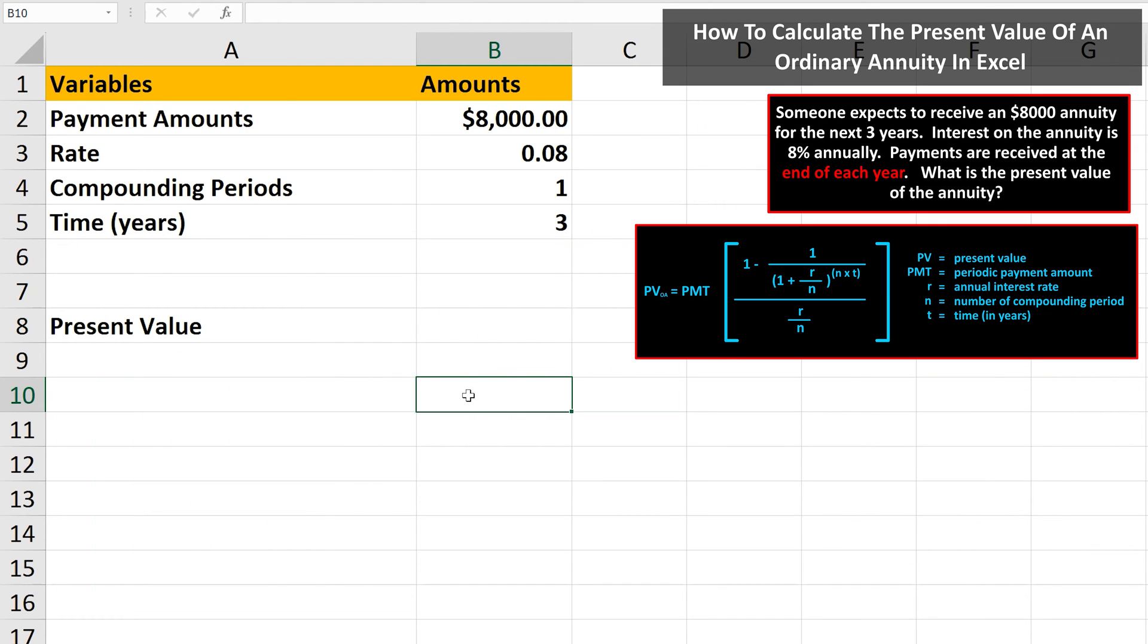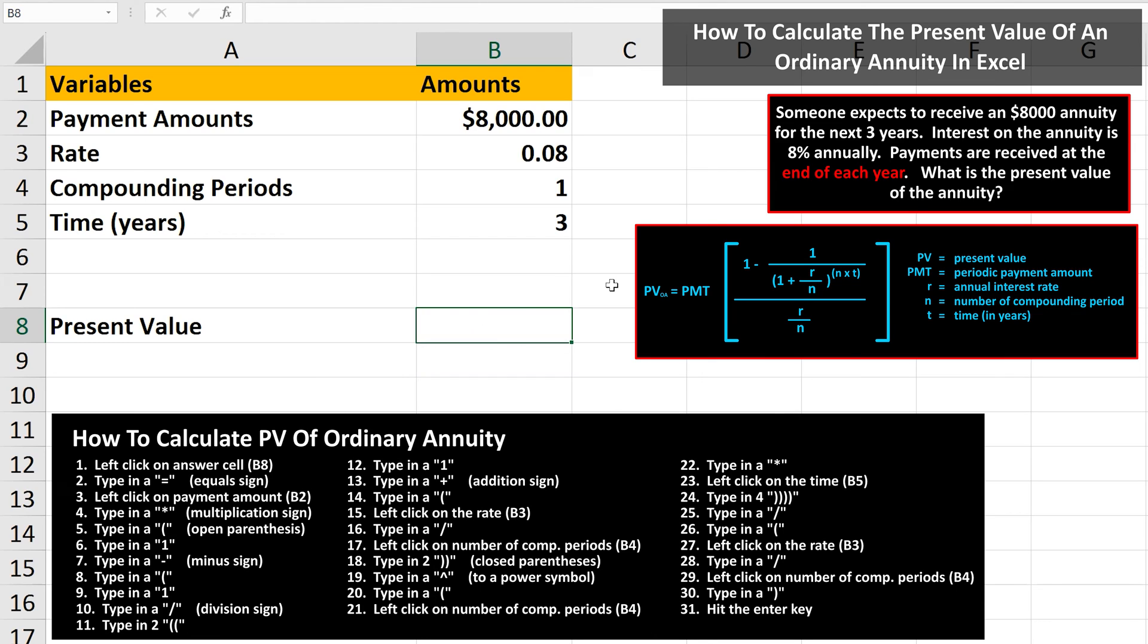We're going to put the answer in cell B8, so we left click on cell B8, so it is highlighted. Next, we type in an equal sign. Then, following the formula, we left click on the payment amount, cell B2.